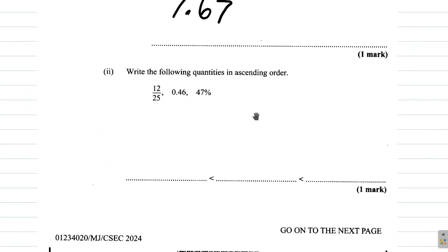Write the following quantities in ascending order — that means from smallest to largest. You have one of them as a fraction, one as a decimal, and one as a percentage. It's difficult to compare sizes when they are in different forms, so it might be easier to convert them all into the form of percentages.